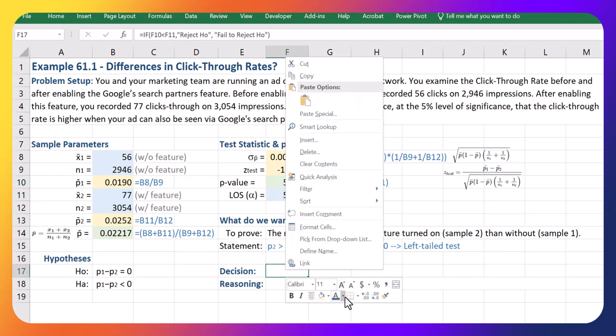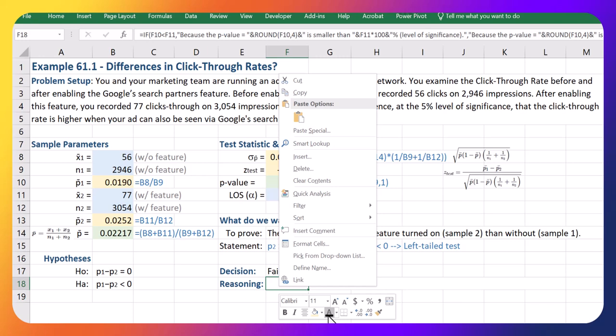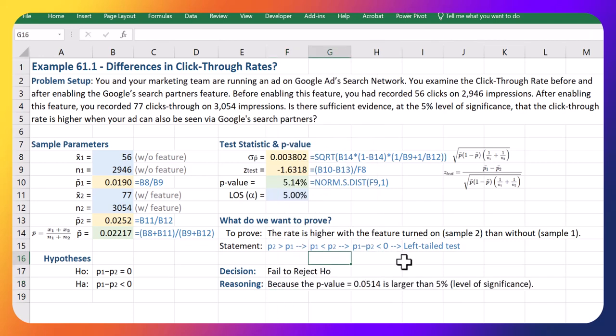H naught—well, we end up failing to reject H naught because that p-value is ever so slightly higher than the five percent. It sure is close, but we cannot definitively say yes, that we can reject H naught, because our p-value is just slightly over. Now let's finish off with a conclusion.